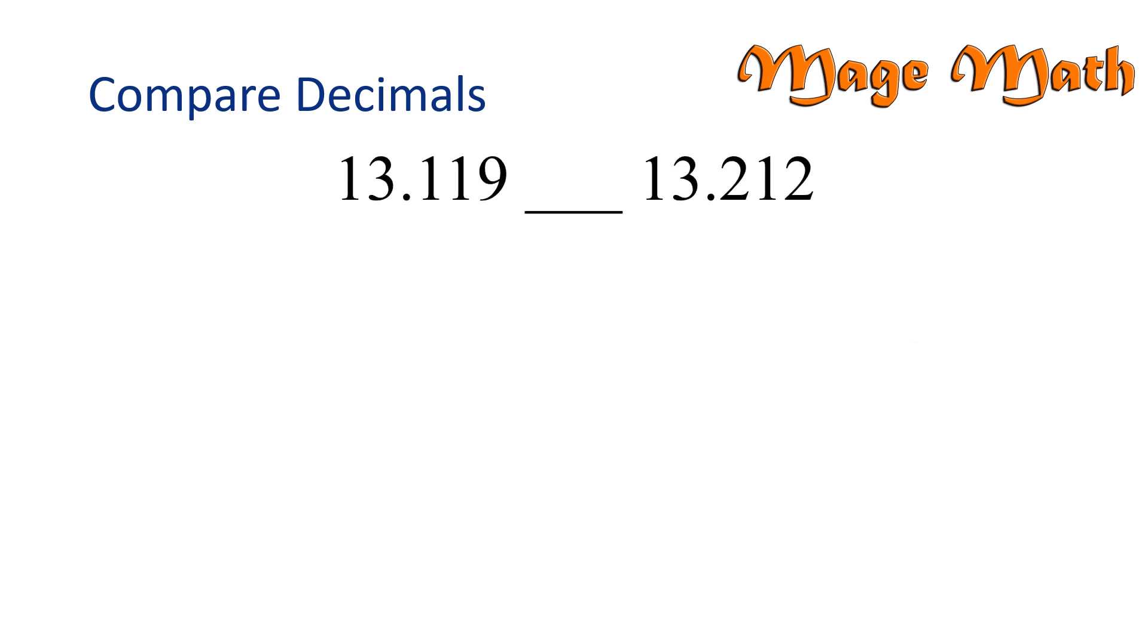Let's take a look at our first problem. Let's compare the decimals 13 and 119 thousandths and 13 and 212 thousandths. Notice both decimal numbers have the same whole number parts, 13. In this case, we only need to focus on comparing just their decimal numbers.